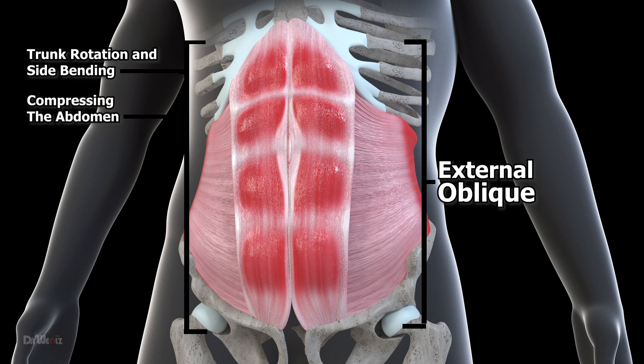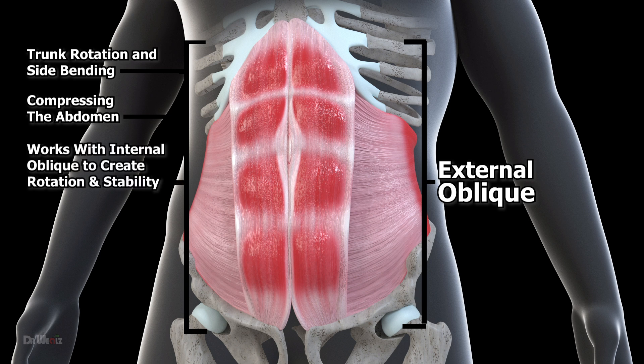The external oblique is also responsible for compressing the abdomen. It works together with the opposite side's internal oblique muscle to create rotation and stabilization during twisting movements.